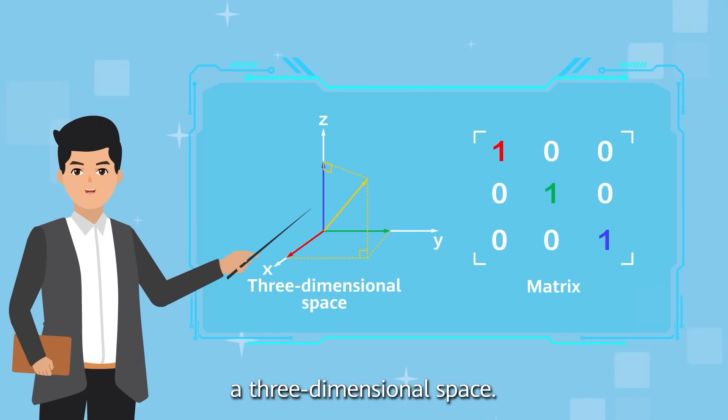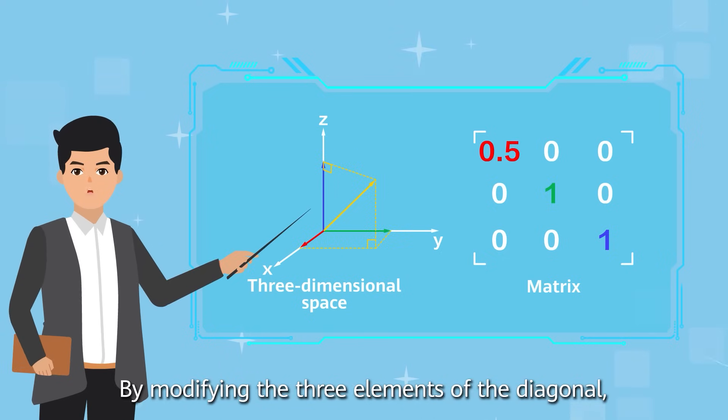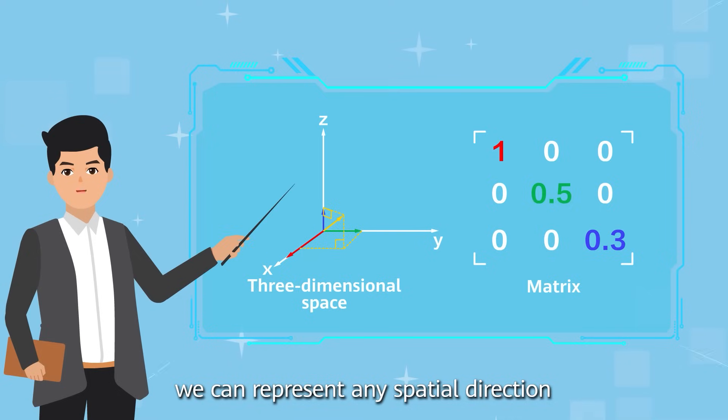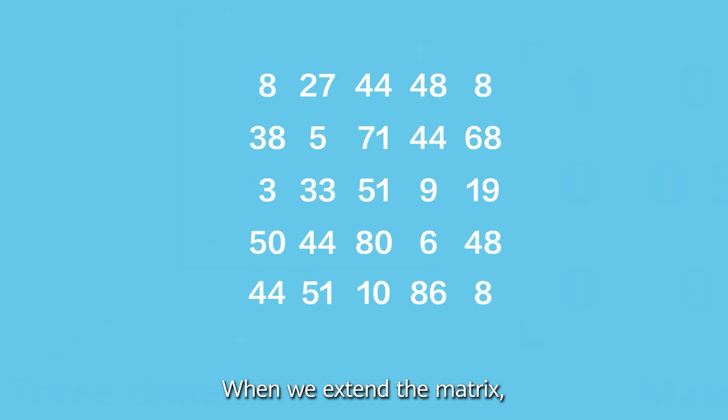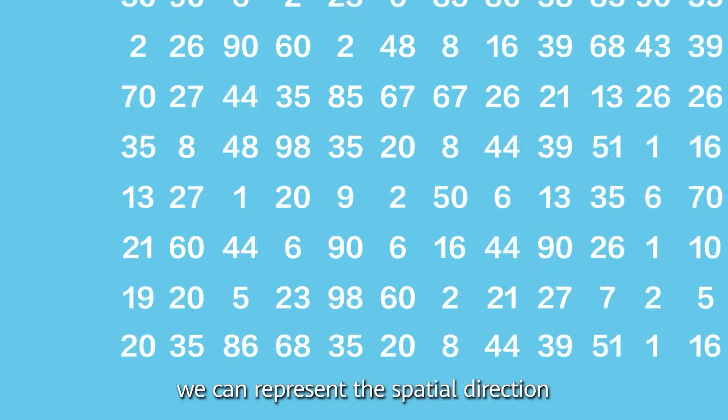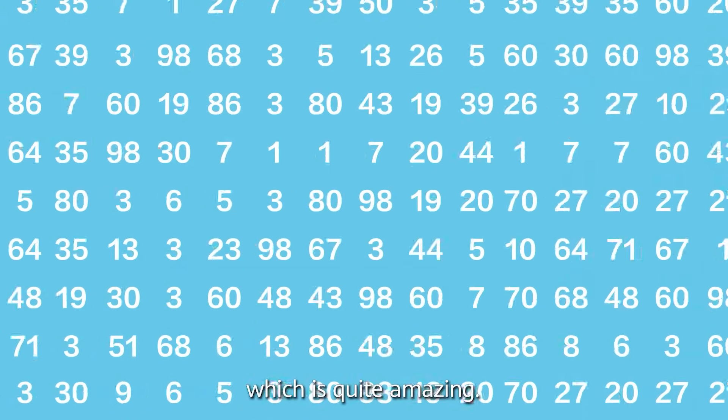This matrix can make up three-dimensional space. By modifying the three elements of the diagonal, we can represent any spatial direction and its amplitude in three dimensions. When we extend the matrix, we can represent the spatial direction in any high-dimensional space, which is quite amazing.